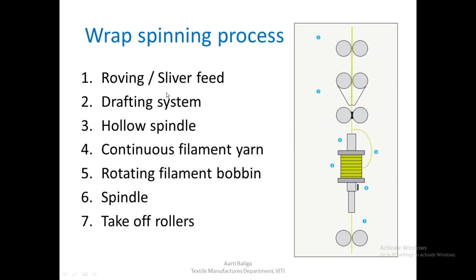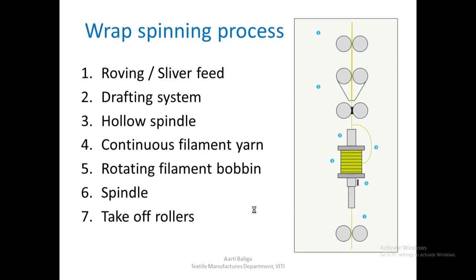The yarn that you finally get is a two-component yarn, which consists of staple fibres fed through the drafting system, covered by a filament by twisting. The final yarn would have no twist in the core and the filament would be wrapped around it. This is the structure of the wrap spun yarn.